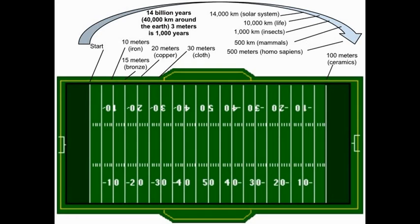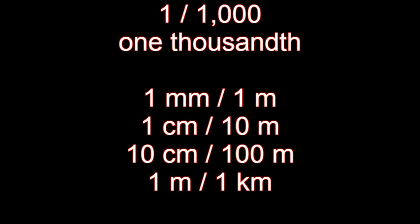To visualize the time frames of our universe with the formation of Earth and the evolution of life, the 14 billion years since our universe came into existence can be scaled to start at the 100 meter path and go 40,000 kilometers around the Earth. With this scaling, 3 meters correspond to about 1,000 years. The formation of our solar system would be 14,000 kilometers away, and the origin of life would be about 10,000 kilometers away. Insects would appear 1,000 kilometers away, mammals 500 kilometers away, and Homo sapiens 500 meters away. Ceramics would make their mark at the 100 meter end point of the path. Cloth at 30 meters, copper at 20 meters, bronze at 15 meters, and iron at 10 meters.